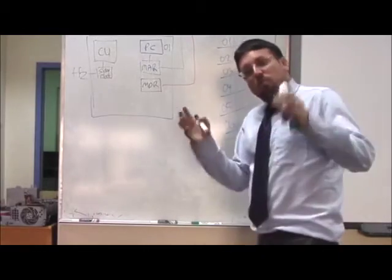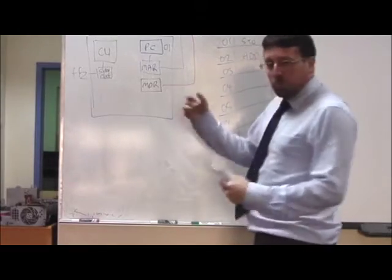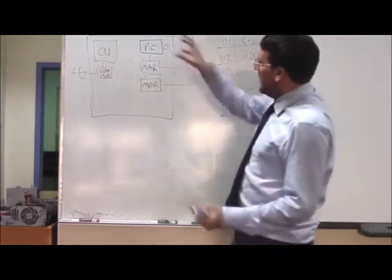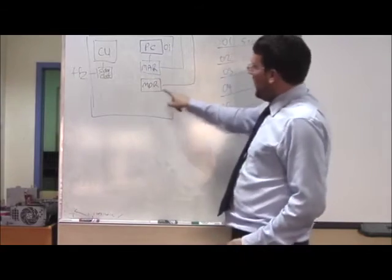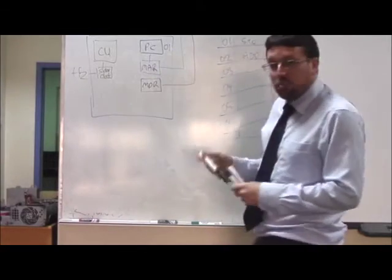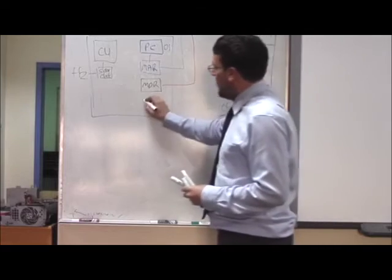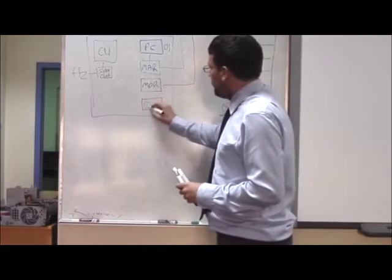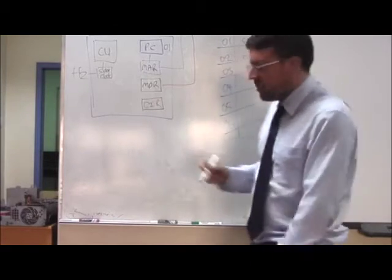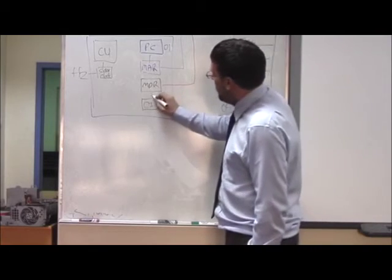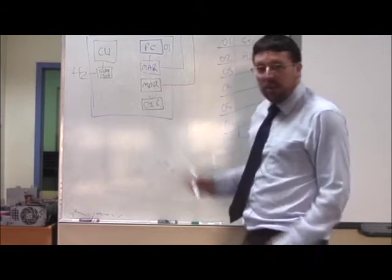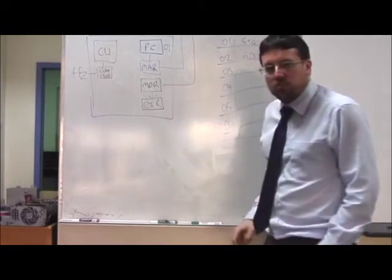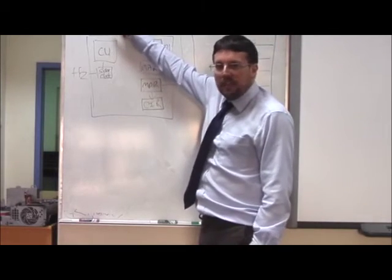Where does the instruction move on to? We can't do the decode and execute parts until the fetch part is complete, and we haven't completed it until that instruction moves from the memory data register to our final register — the CIR, the current instruction register. That instruction comes from the MDR and ends up in the current instruction register. Once the instruction is in the current instruction register, the fetch part of the cycle is complete.